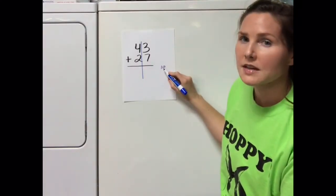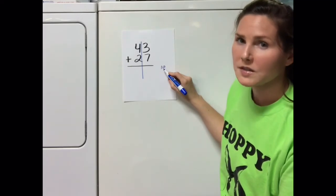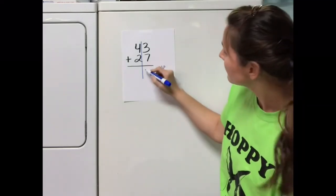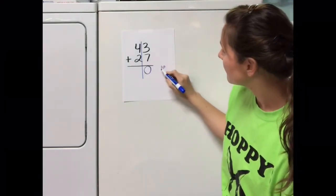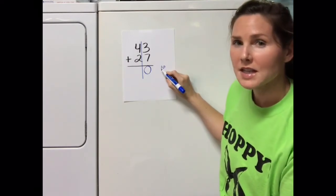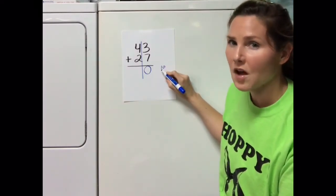The 0 in the number 10 is in the ones place, so I'm going to write a 0 in the ones place. This 1 is in the tens place. I'm going to write it on the top of the tens column.